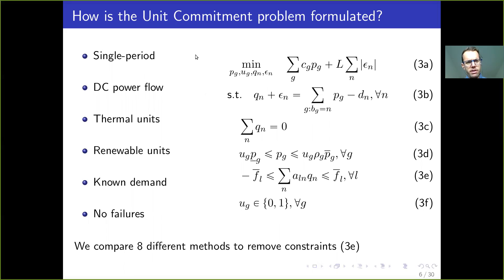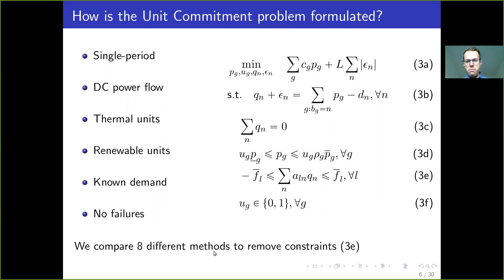This is a mathematical formulation of the unit commitment problem with some assumptions: a single-period DC power flow model, both thermal and renewable units, demand assumed to be known, and no failures. We have the power balance equations, technical limits of the units, and maximum flows through the network. What we are going to do next is compare eight different methods to remove constraints in order to reduce the computational burden of this unit commitment problem.